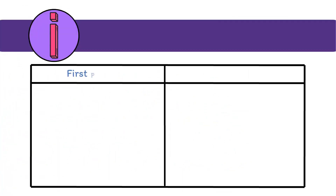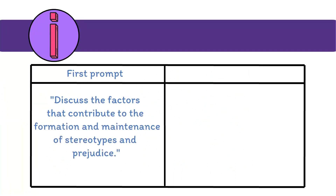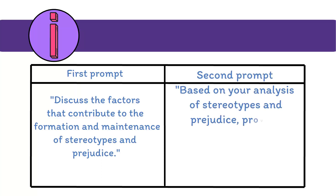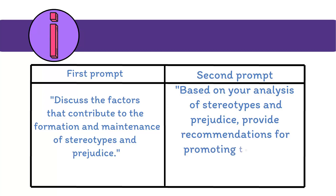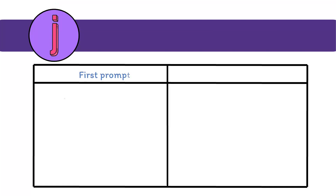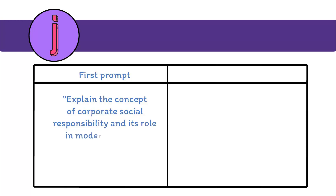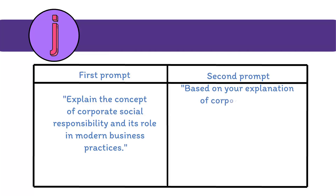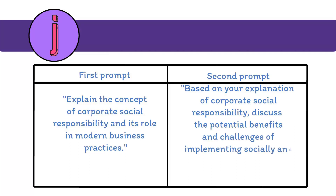I. First prompt: Discuss the factors that contribute to the formation and maintenance of stereotypes and prejudices. Second prompt: Based on your analysis of stereotypes and prejudice, provide recommendations for promoting tolerance, understanding, and social cohesion. J. First prompt: Explain the concept of corporate social responsibility and its role in modern business practices. Second prompt: Based on your explanation of corporate social responsibility, discuss the potential benefits and challenges of implementing socially and environmentally responsible business strategies.